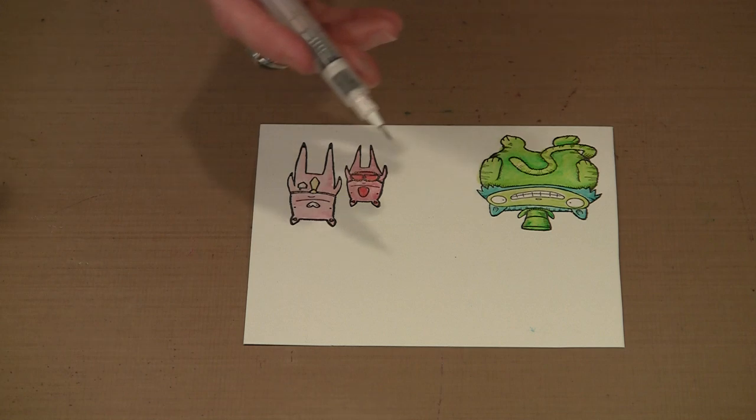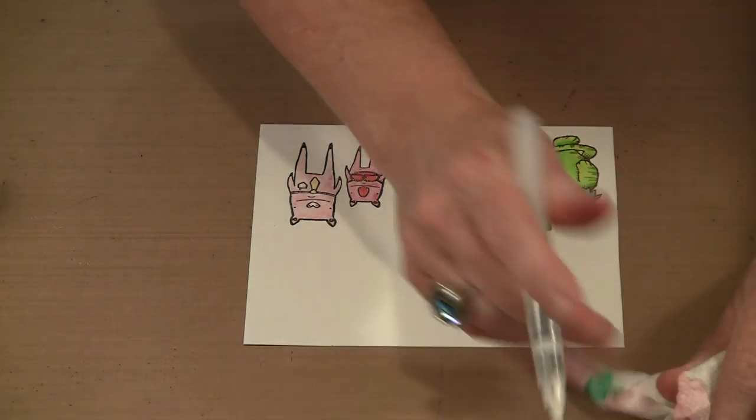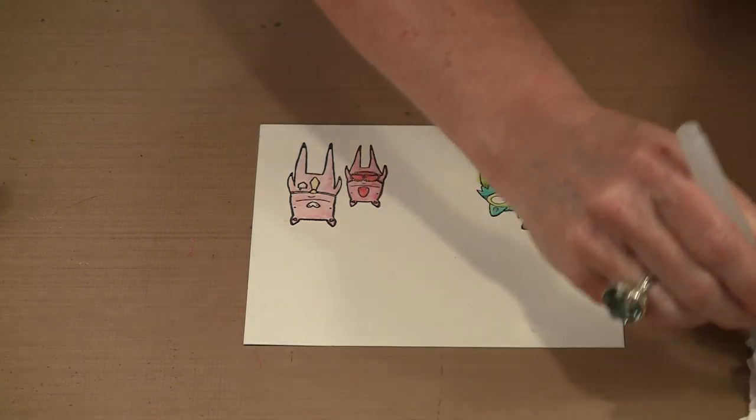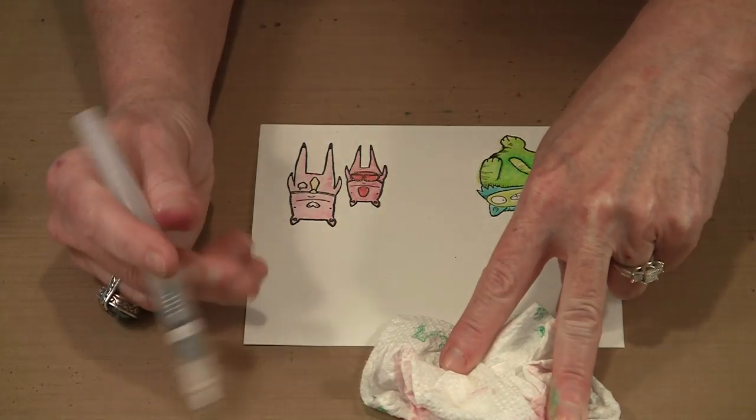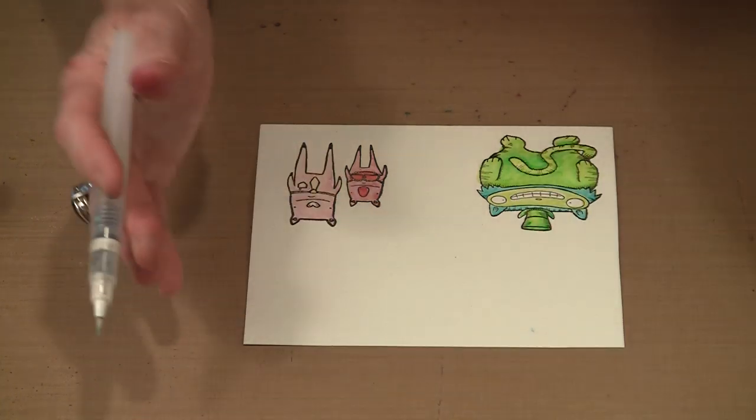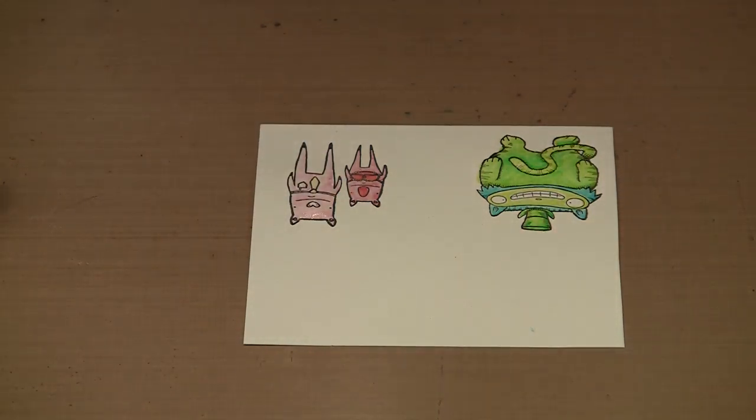When you are through, you just grab a piece of paper towel. Just rub the paper towel with the bristles of the brush until it runs clear and all the paint is off. And that is it. It is good to go. So what else can you do?